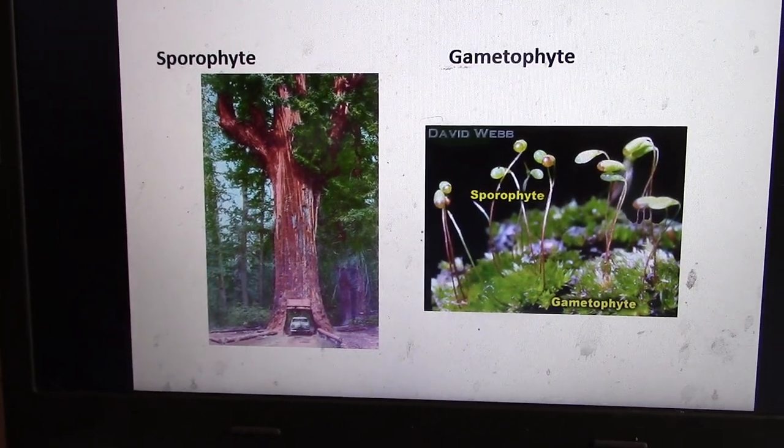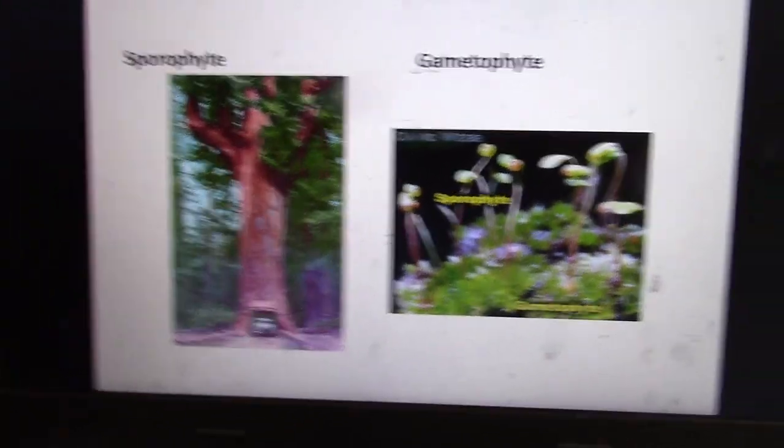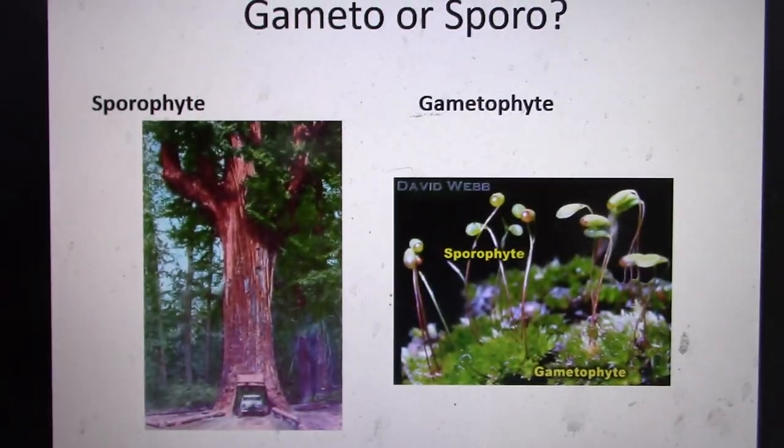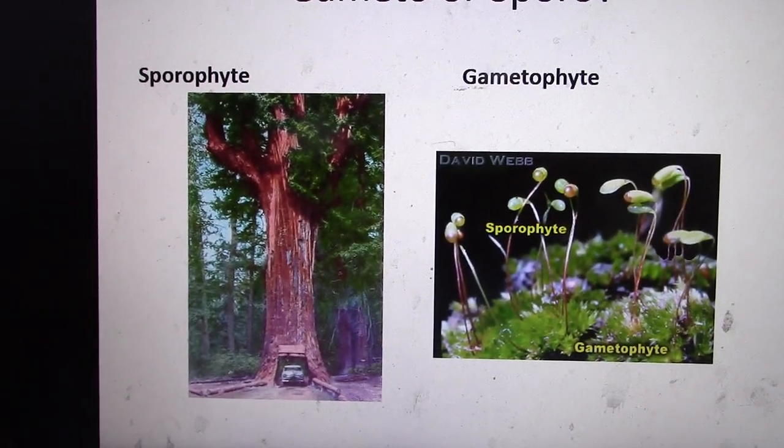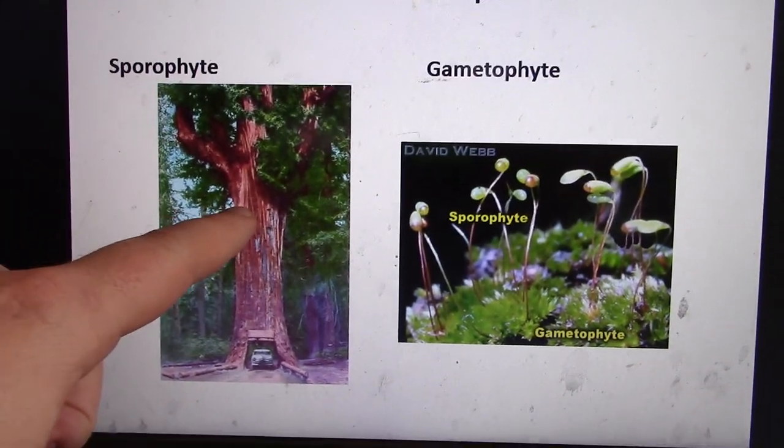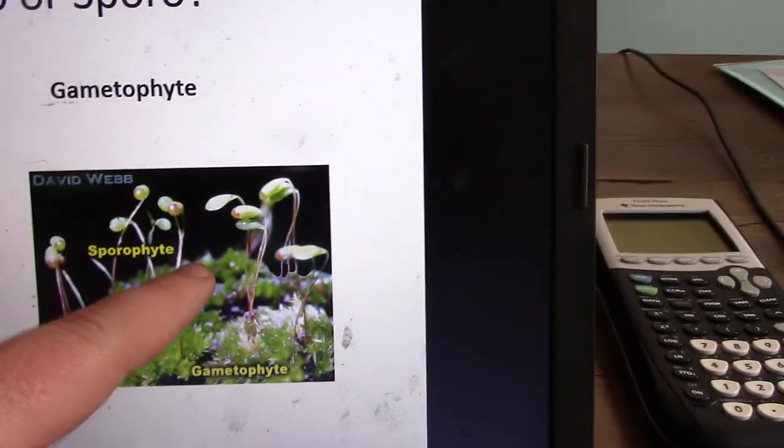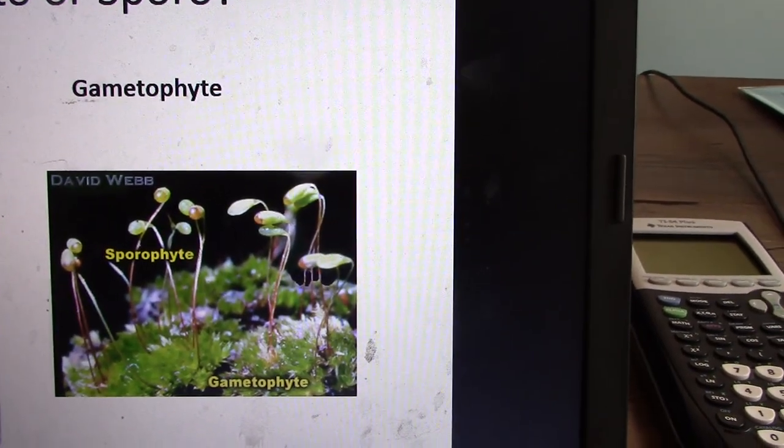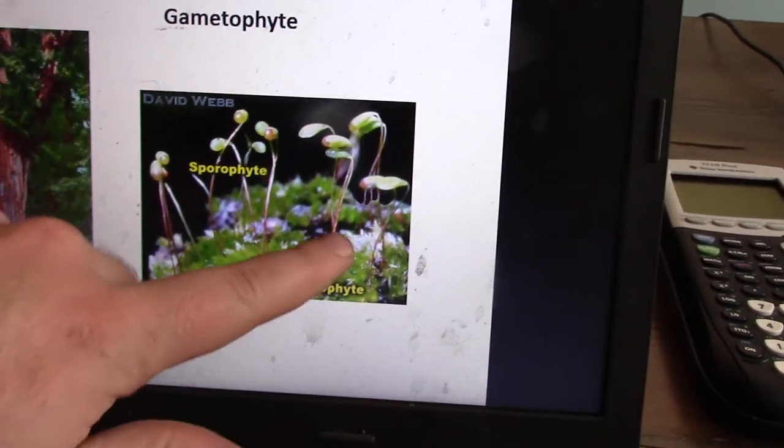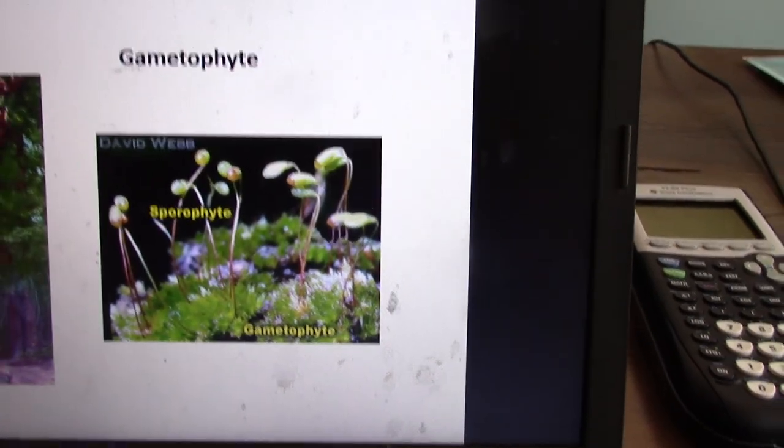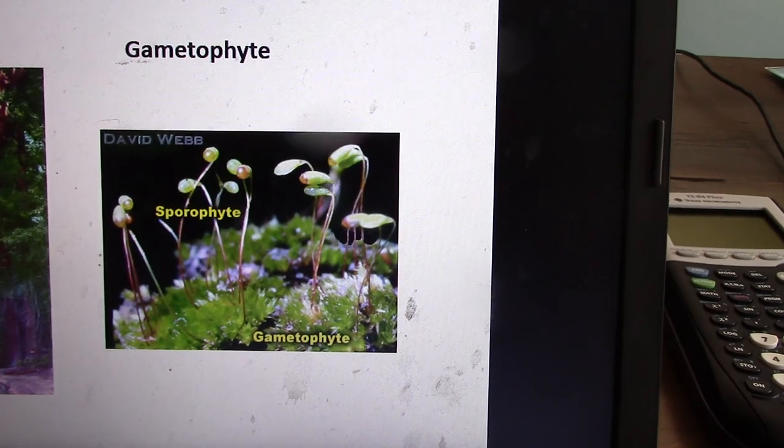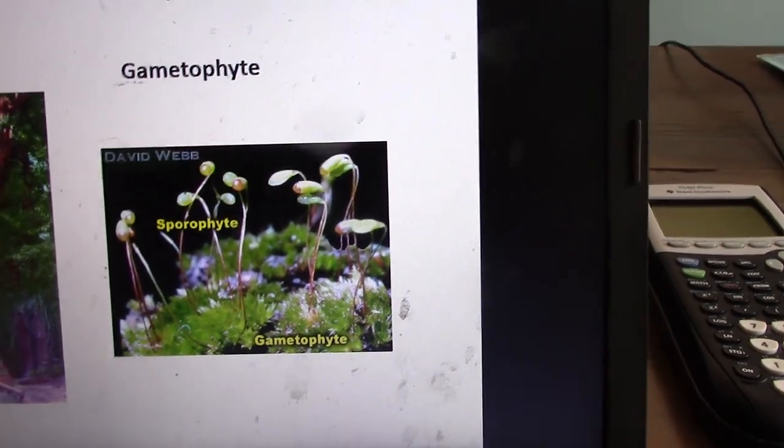In trees, the gametophyte is microscopic and it propagates on pollen. Big vascular plants, things that have xylem and phloem, the sporophyte will be large. And in plants that don't have xylem and phloem, the gametophyte is the main organism. There's nothing that can carry nutrients and water against gravity with non-vascular plants.